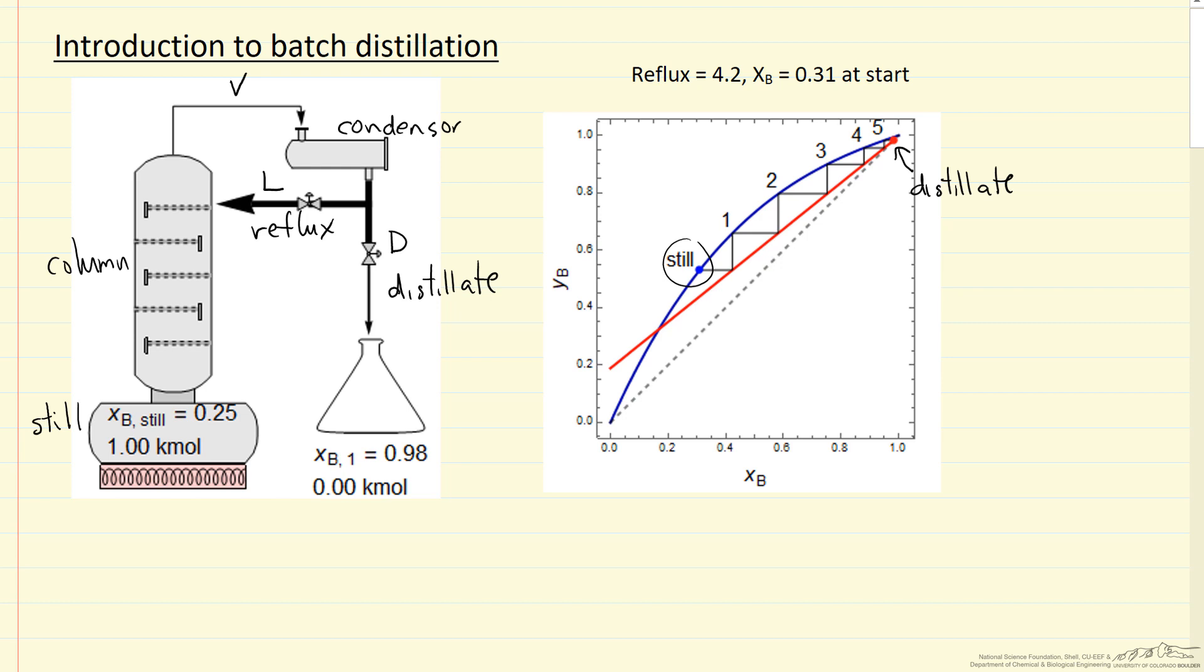And the reflux ratio is the liquid flow rate over the distillate flow rate. And then the slope of this line is related to this reflux ratio.